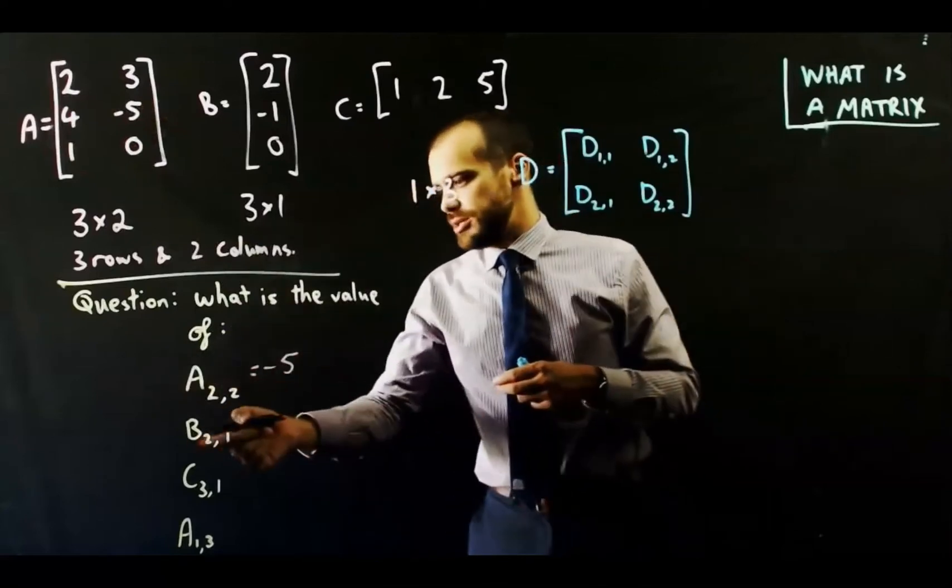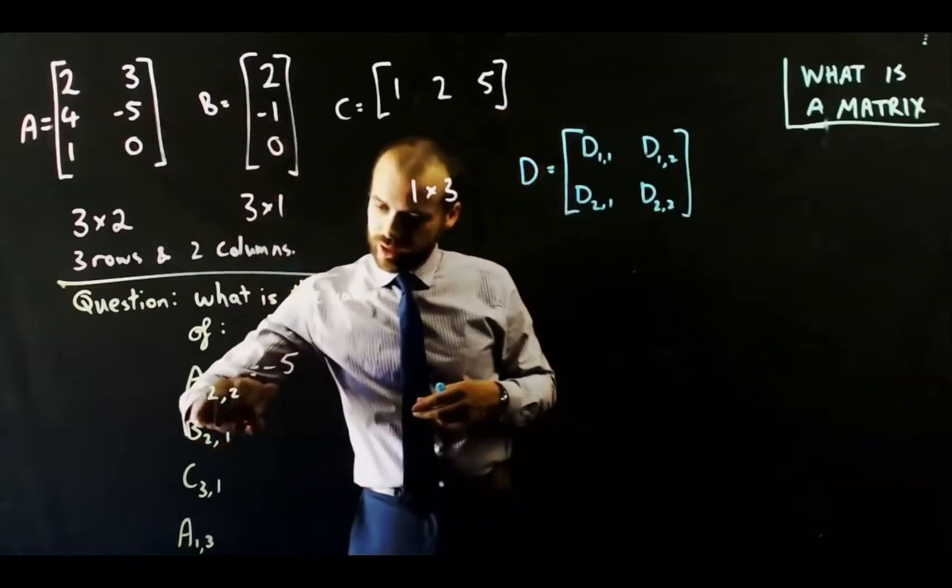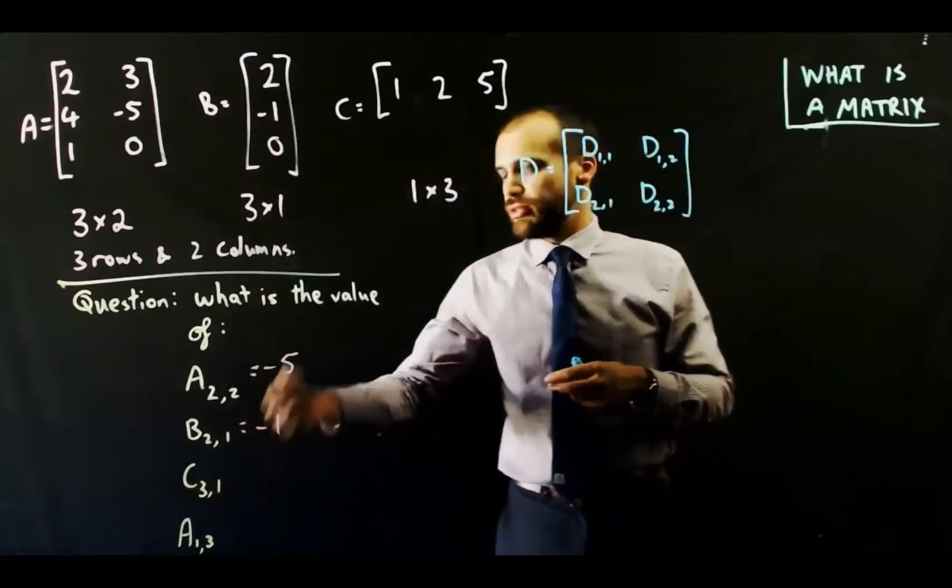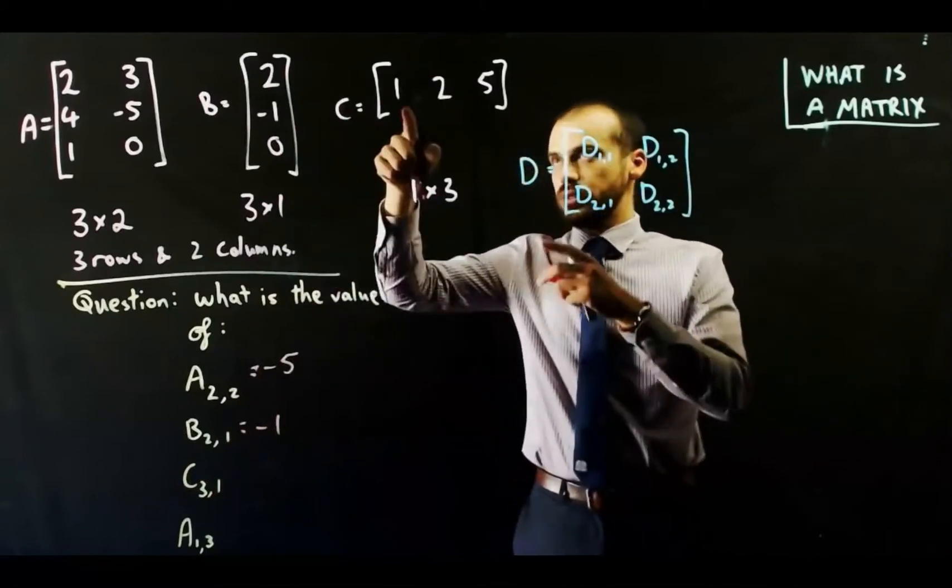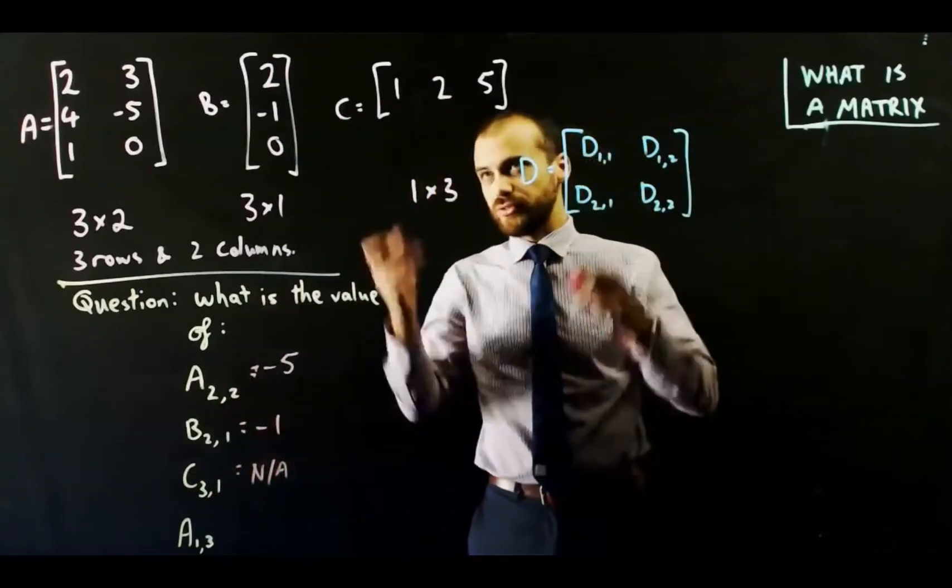So element A 2,2 is negative 5. Element B 2,1 is row 2, column 1. C 3,1, that doesn't exist because there's not 3 rows in there.